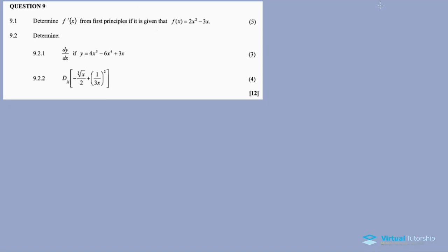9.1 asks: determine f prime of x from first principles, if it is given that f of x - well, that's where you collect the marks. This is another question where you can pick up marks here. So this one is a straightforward one. 9.1, f prime of x is equal to the limit of h as it approaches 0.